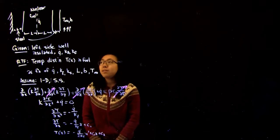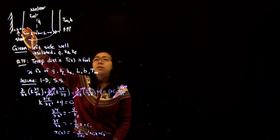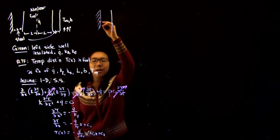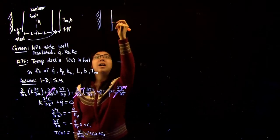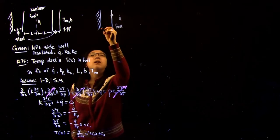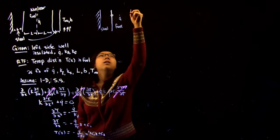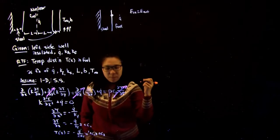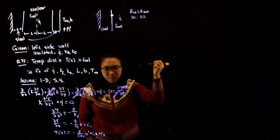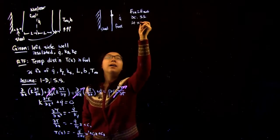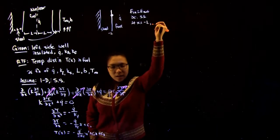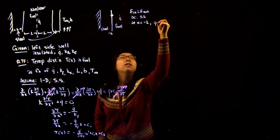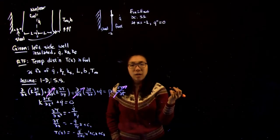The next step is an energy balance at the boundary between the steel and the nuclear fuel. Because the left side is fully insulated, no heat can permeate in that direction. At steady state, energy in must equal energy out. So at x = −L, where we've centered the zero axis at the center of the fuel region, the heat flux must equal zero because no heat is being transferred across that boundary.